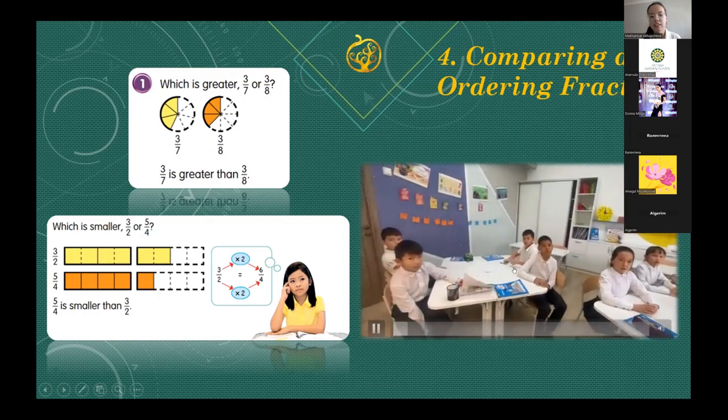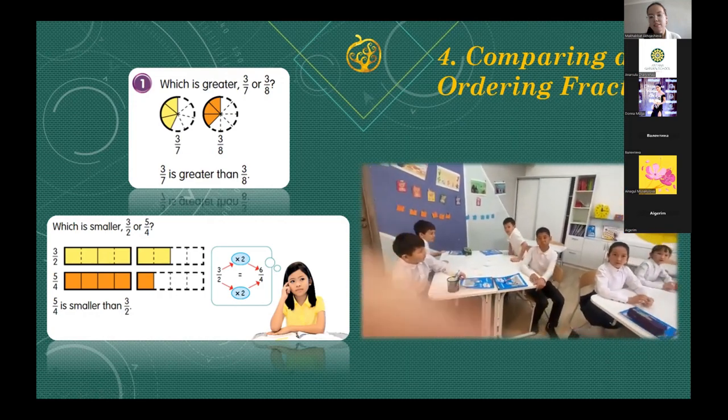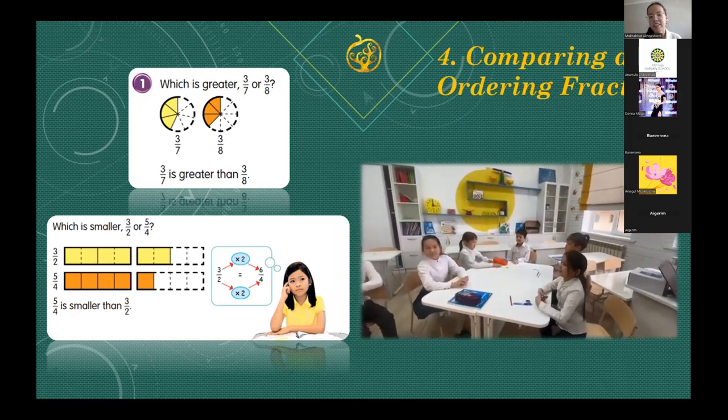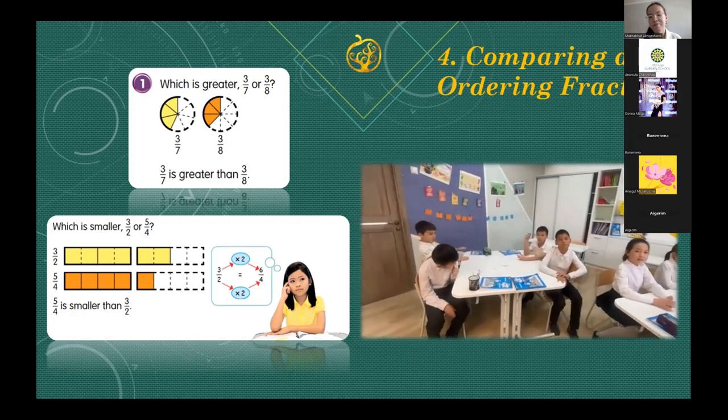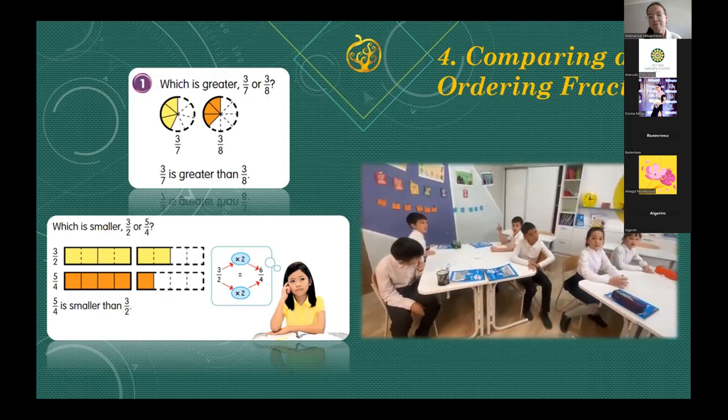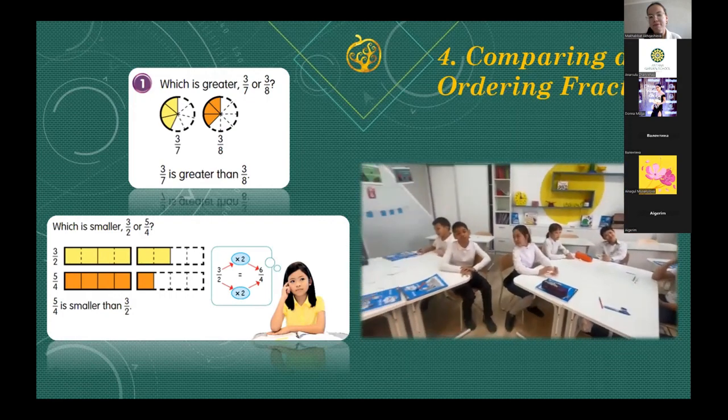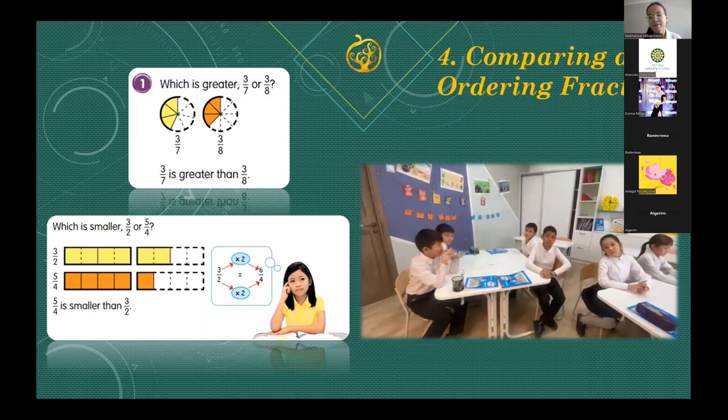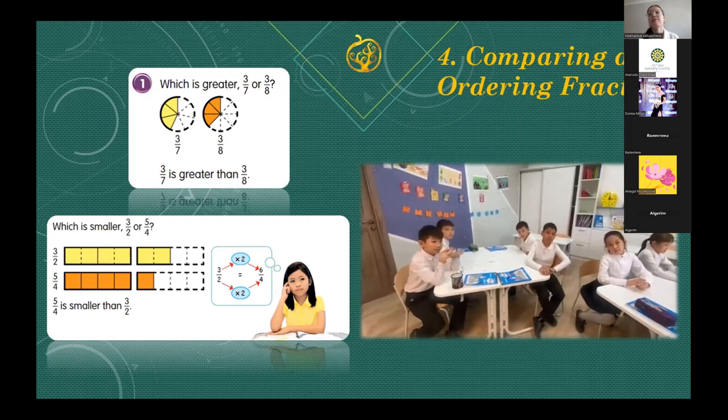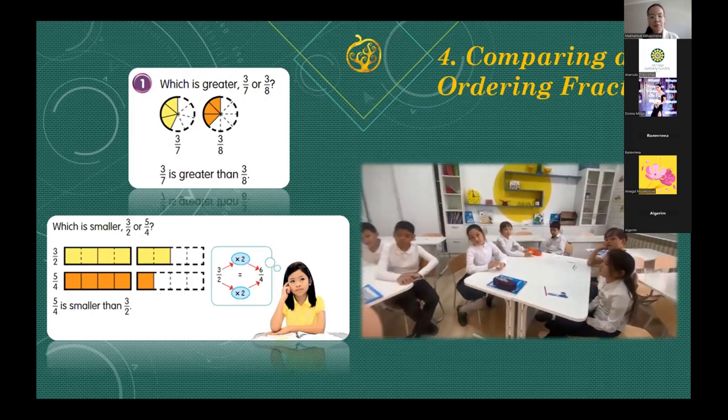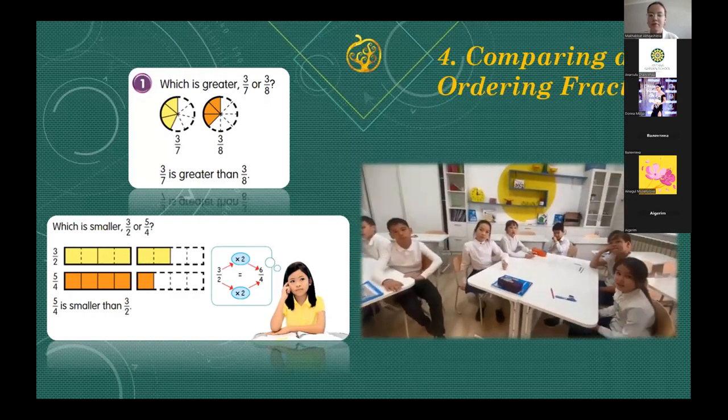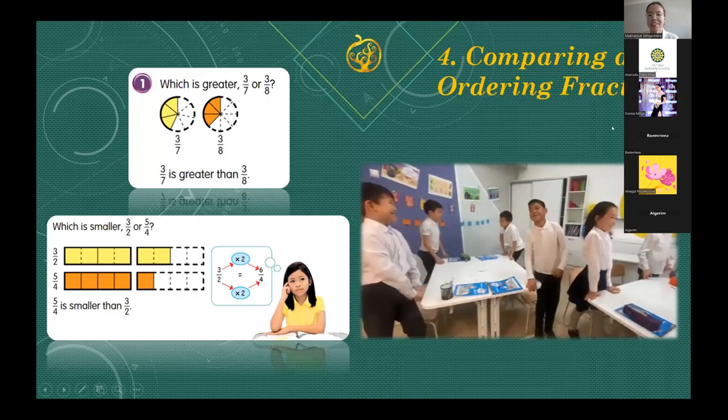One half is greater than one third. Yes. Great. Sit down. Next. One tenth is smaller than one twelfth. No. Okay. So next is three quarters is greater than one whole. No. Okay. Next one is six sixths is equal to one. Yes.